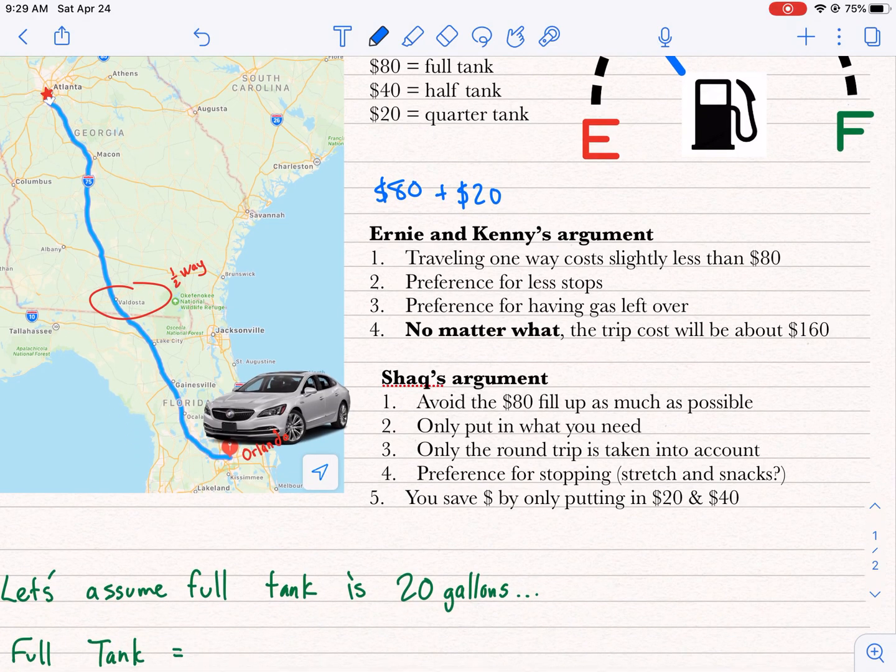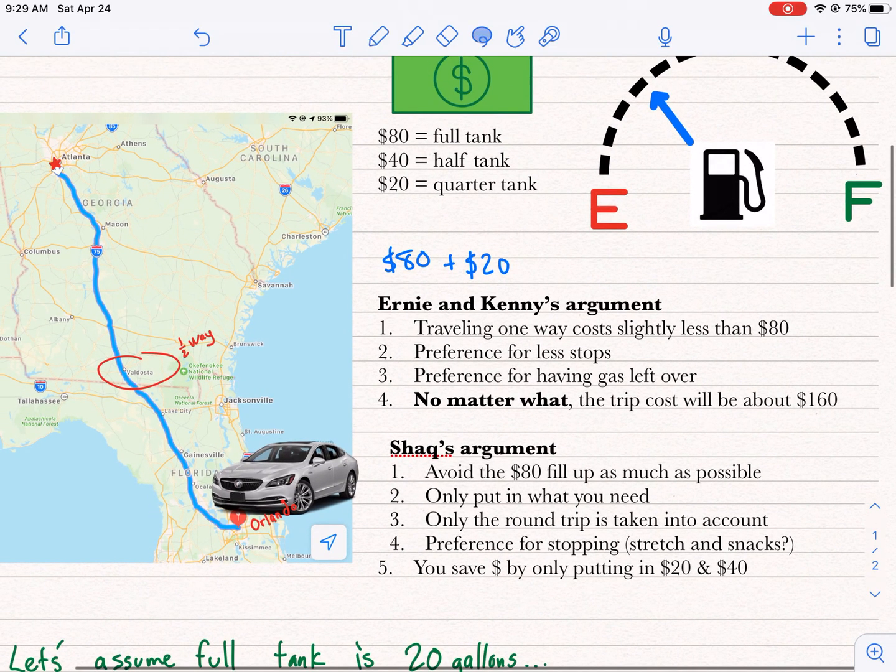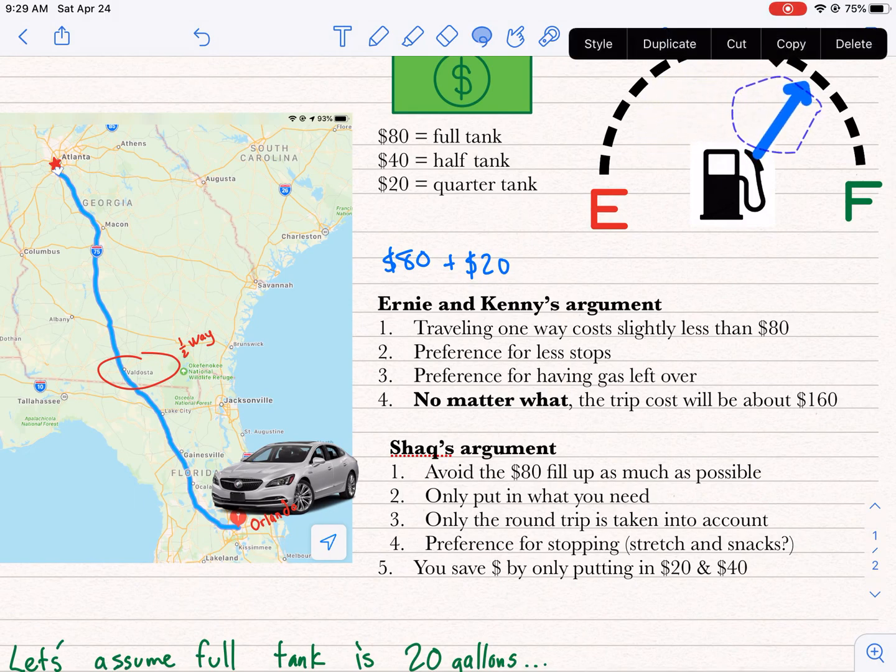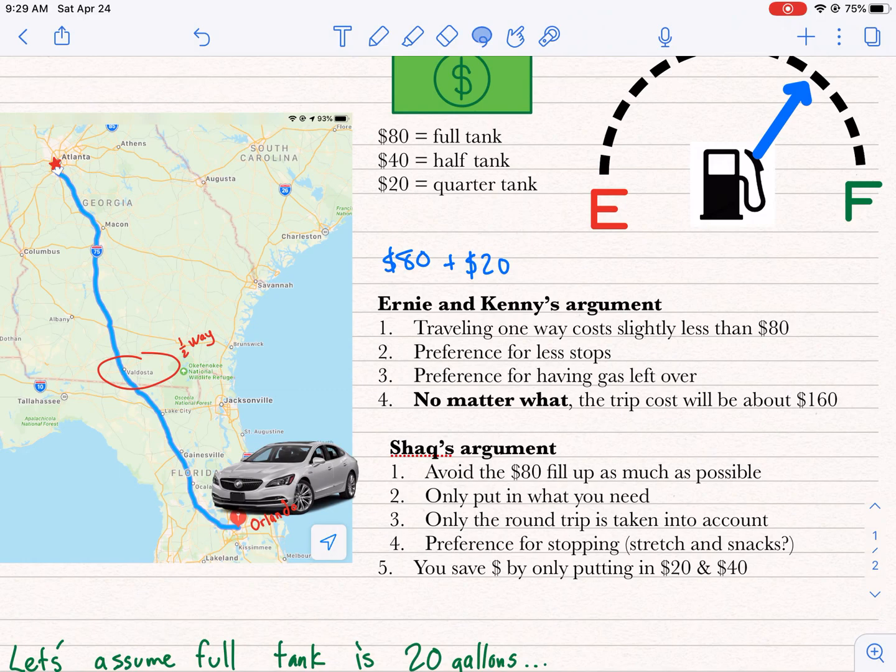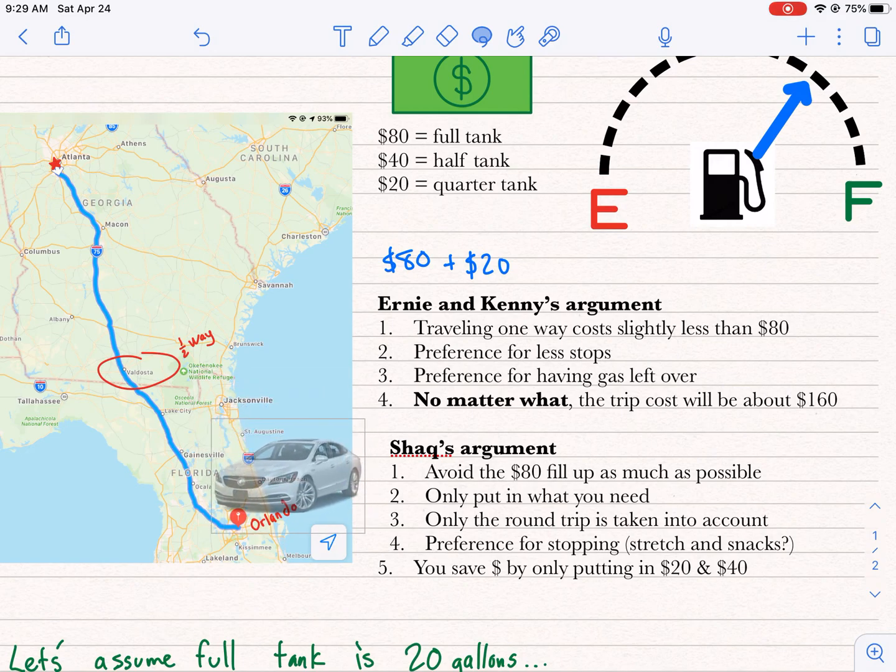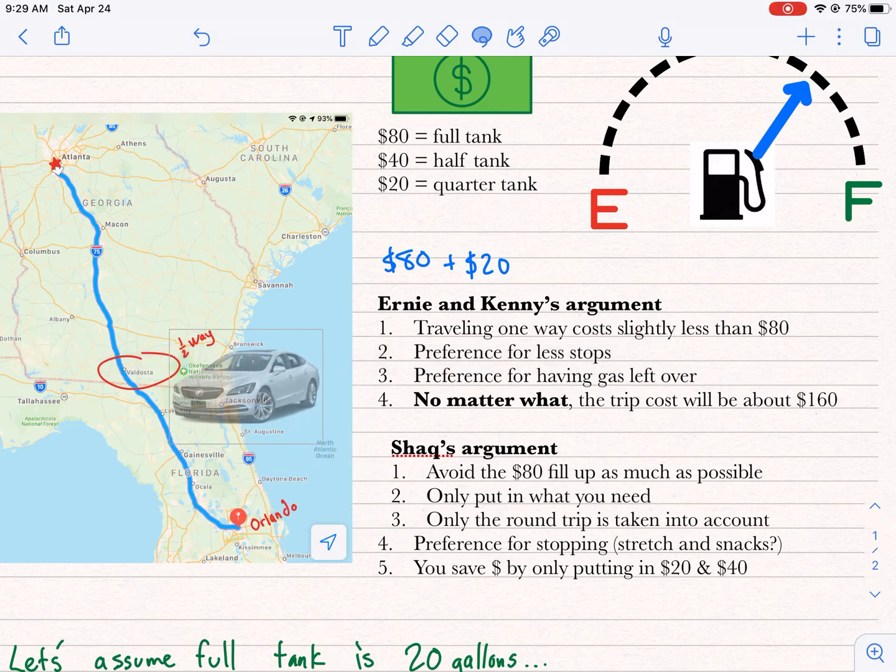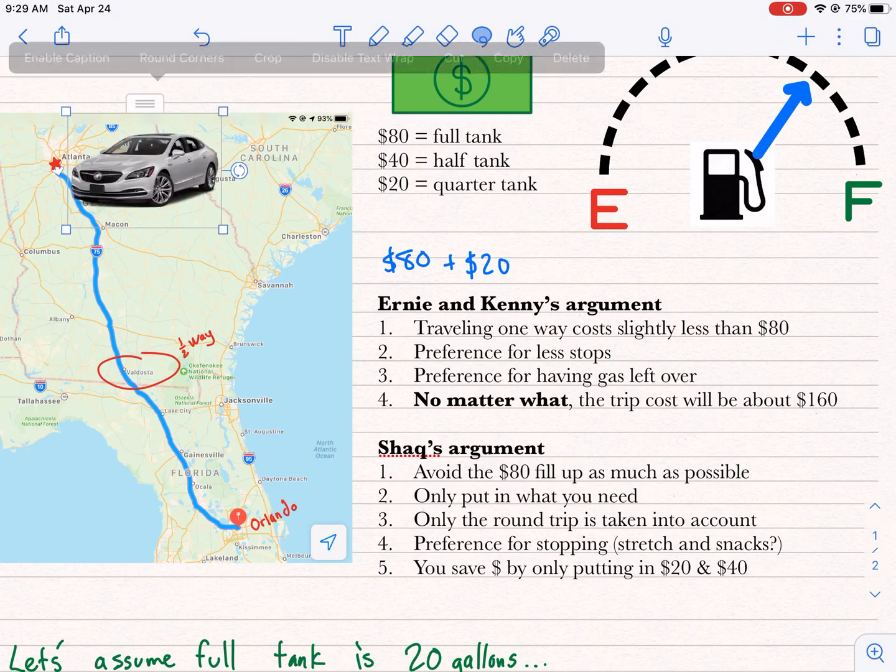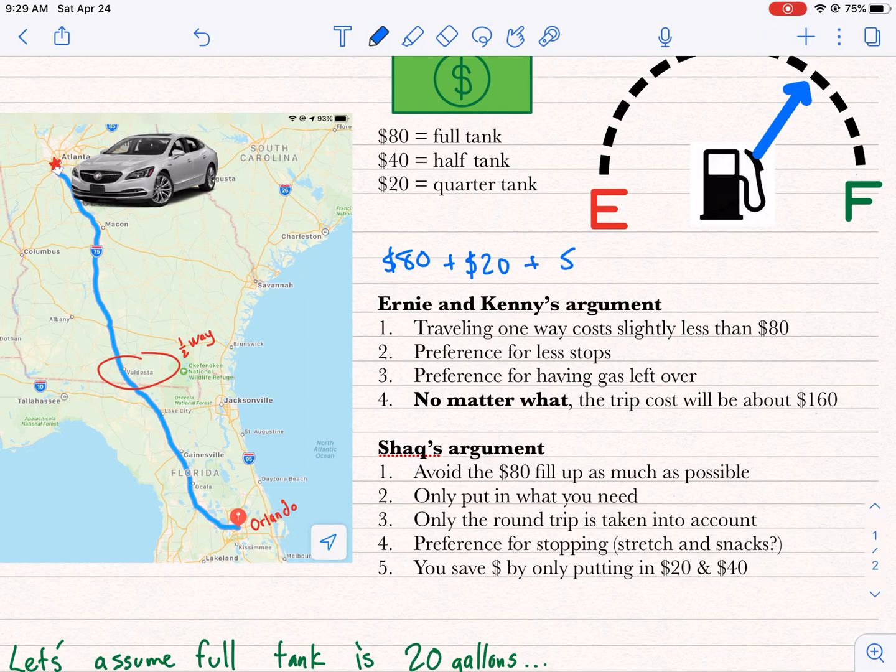So we're at one quarter of a tank. Now at this point, Shaq says put in another $40. Well, $40 is half a tank. So we're going to go back up to three quarters of a tank. So we're at three quarters of a tank in Orlando. We filled up in Orlando and now we're going to drive the whole way back. So add this $40 and this equals $140.